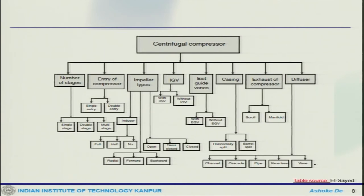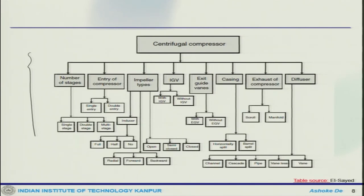If you look at the classification of different kinds of centrifugal compressors, it takes into account a lot of things. It starts with the number of stages — one can think about different types of centrifugal compressors that are possible and what other complications can arise. As I mentioned, the centrifugal compressor was initially first used in the first turbojet engine — that is the nice history associated with it. For number of stages: it could be single stage, multi-stage, or double stage; multi-staging is not easy. For entry of the compressor, it could be single entry or double entry.